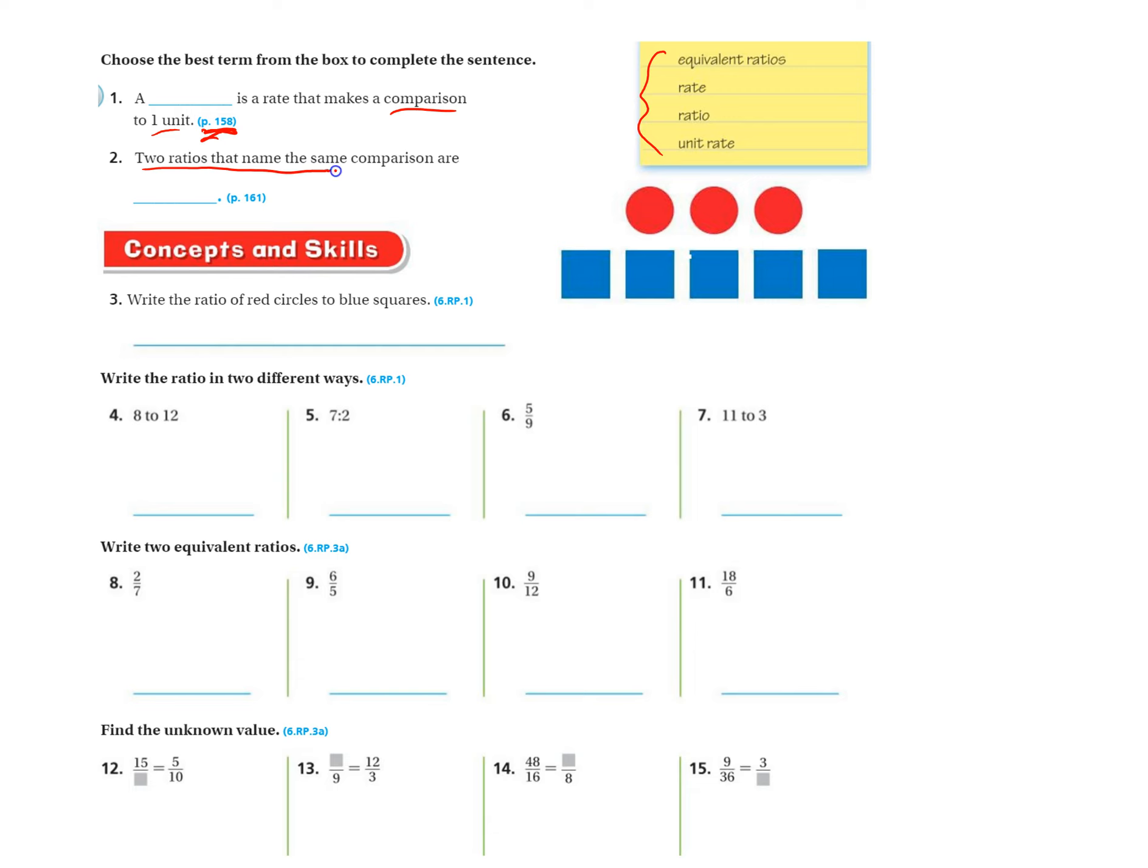Number two, two ratios that name the same comparison are, go to page 161. Again, see what they're talking about, which one of these things they're talking about when they say they're showing two ratios that show the same comparison.